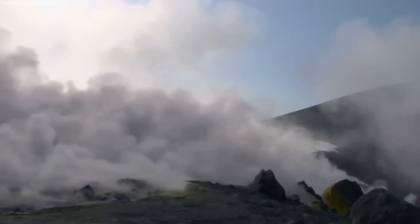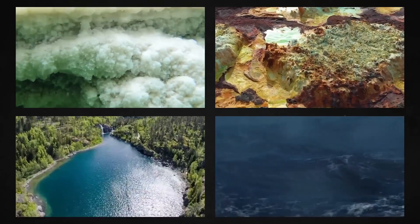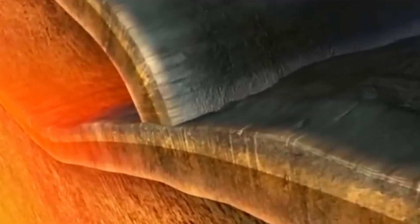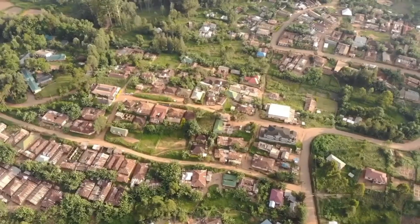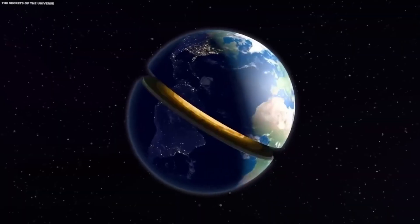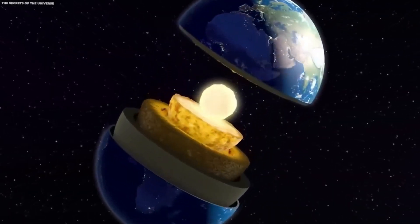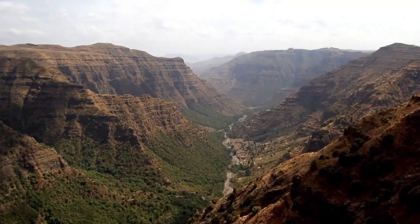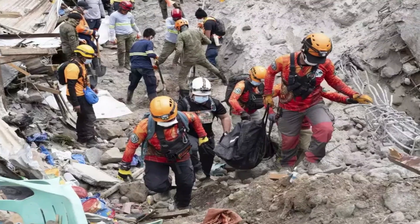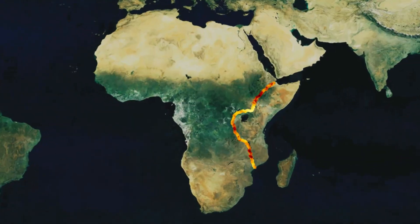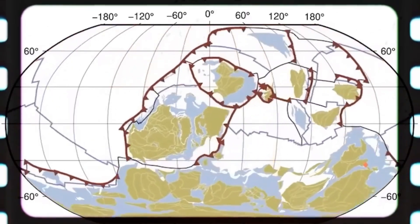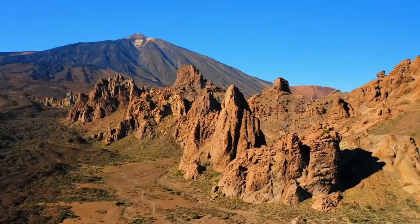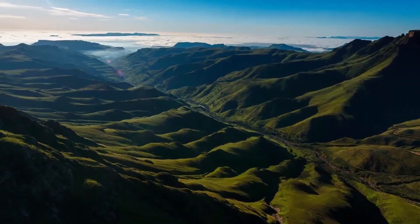The creation of a new ocean will also bring significant climatic and ecological shifts. Coastal climates will become more humid, altering rainfall patterns and vegetation types. The biodiversity of the region will undergo dramatic changes as terrestrial ecosystems give way to marine environments. New coral reefs, fisheries, and saltwater ecosystems will emerge, supporting species adapted to this transformed habitat. However, this evolution may also result in the loss of existing terrestrial ecosystems. Rift lakes such as Lake Tanganyika and Lake Malawi could become part of the new ocean system, further transforming their ecological dynamics.